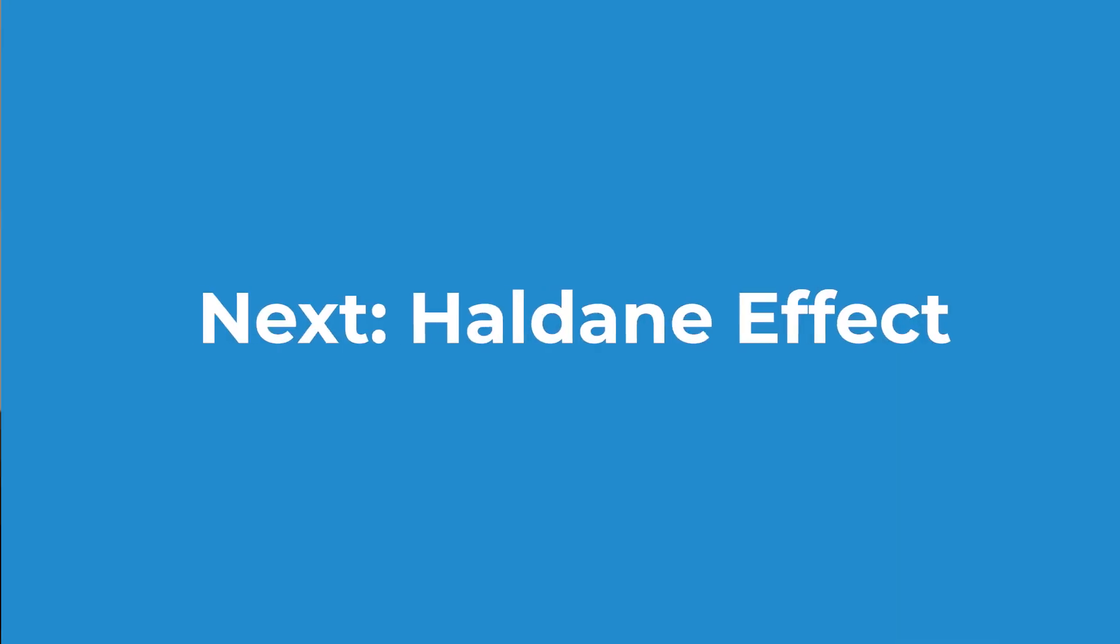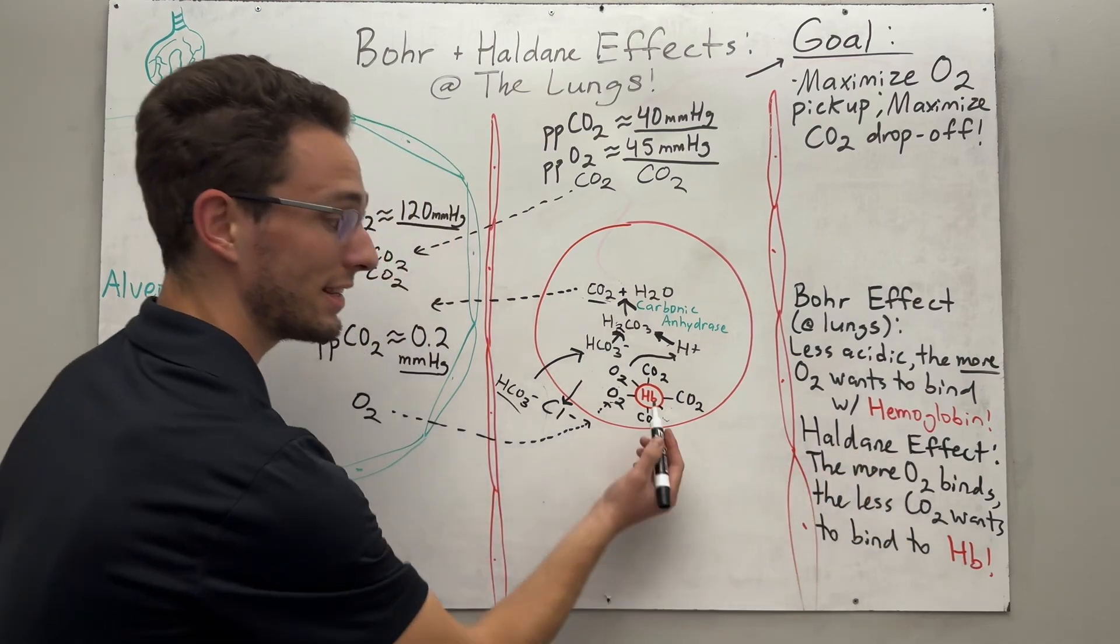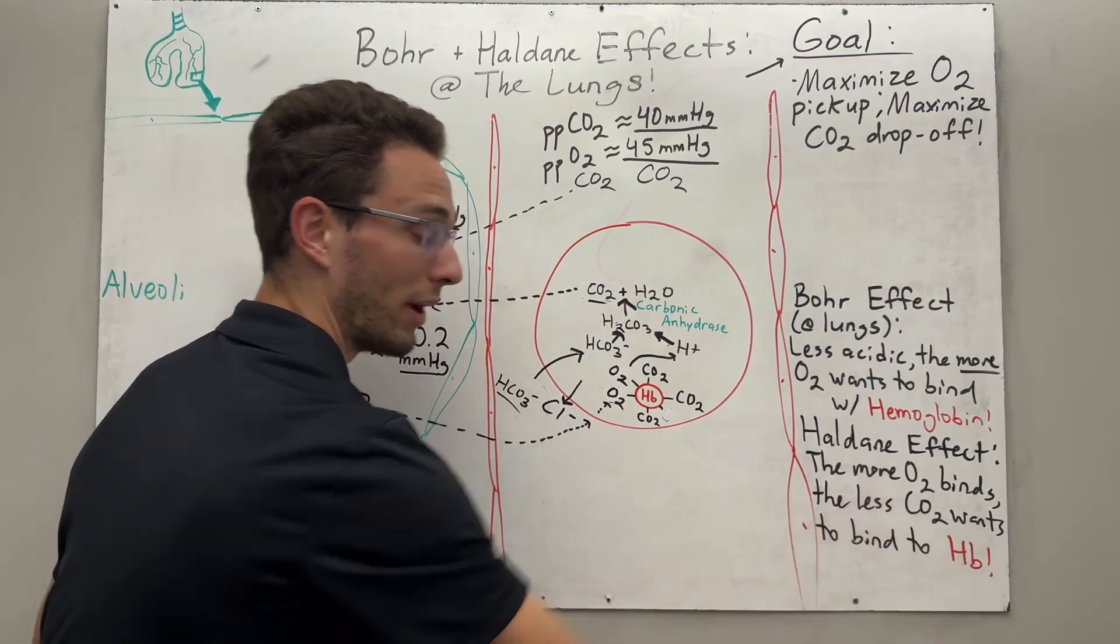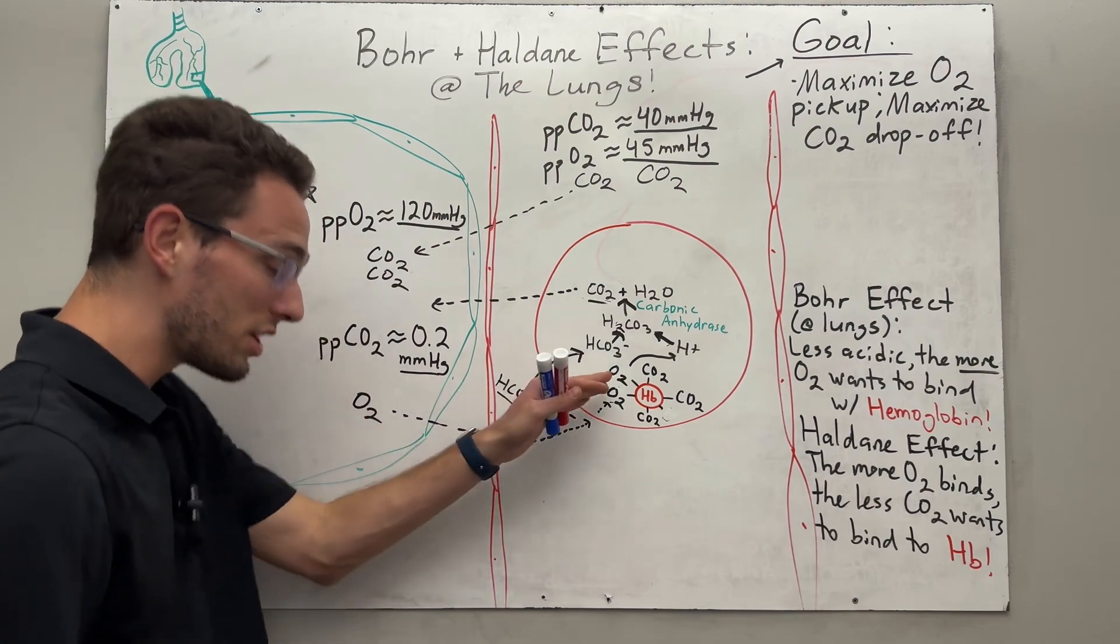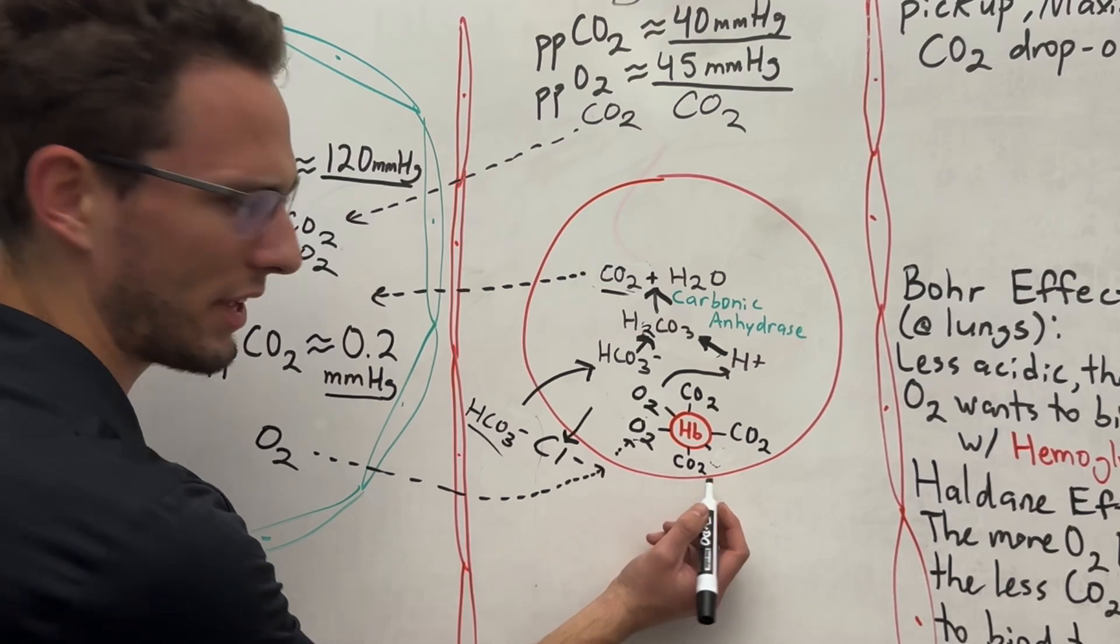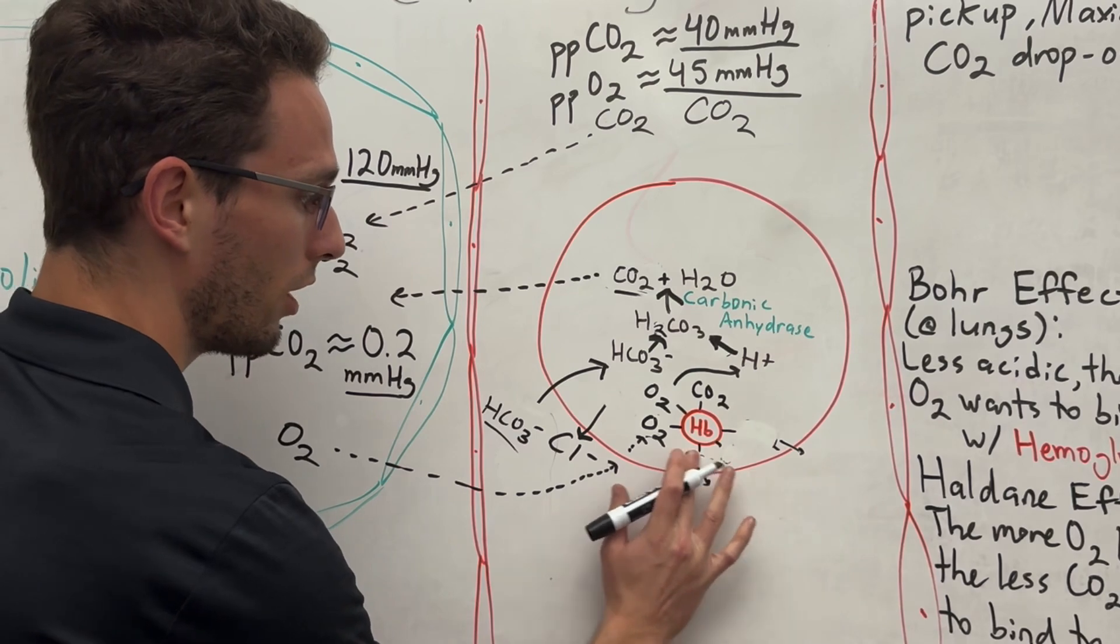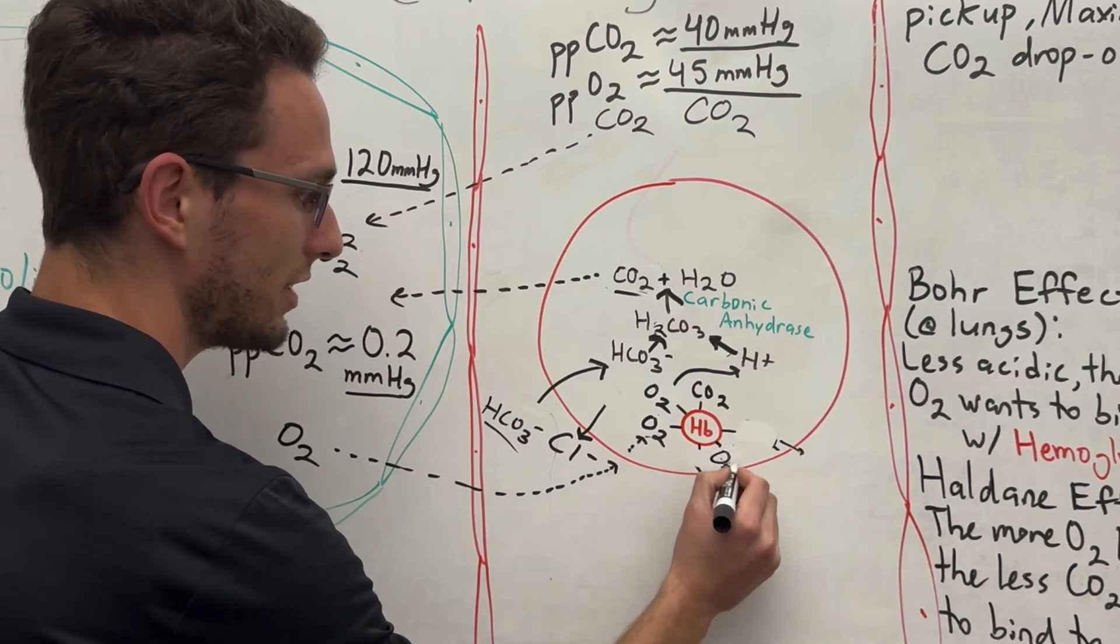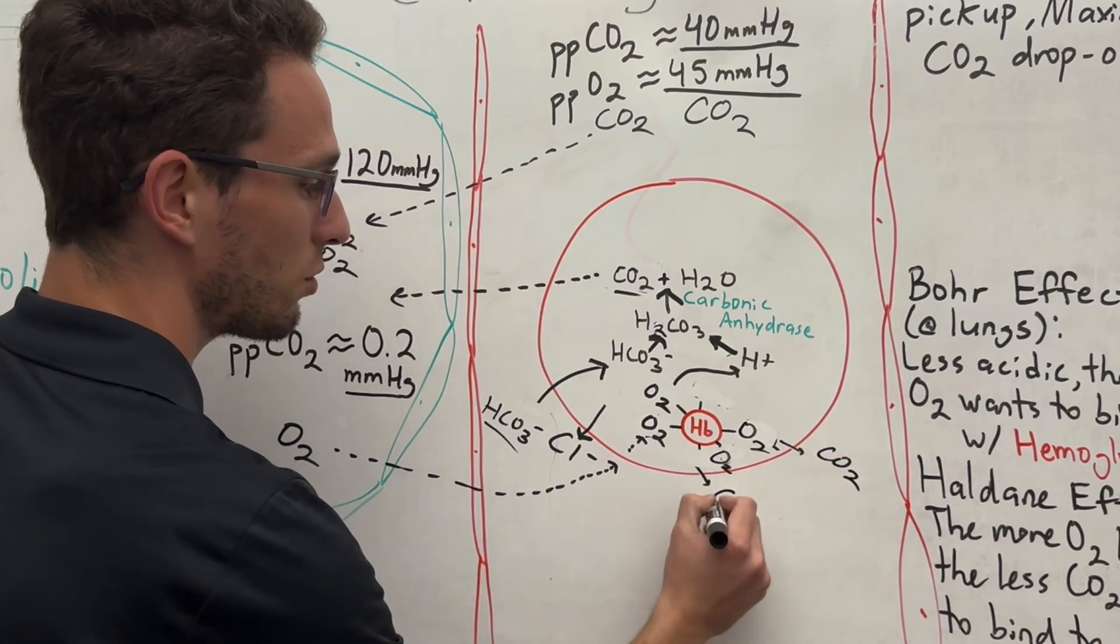So the Haldane effect states this in this case. The more oxygen begins to bind to hemoglobin, the less carbon dioxide wants to bind to hemoglobin. So basically, as oxygen is starting to diffuse into this red blood cell, the CO2 is like, no, no, no, I don't like hanging out with oxygen, so I'm just going to pop off and pop off. So that allows for more oxygen to attach. And CO2 is going to detach.